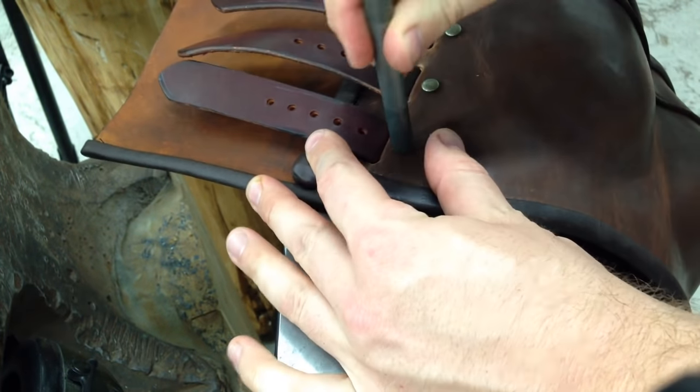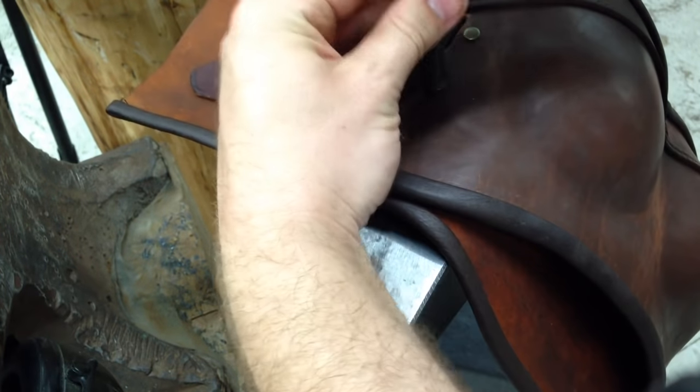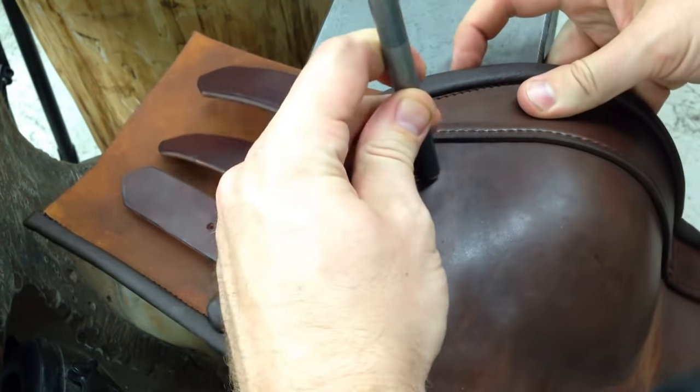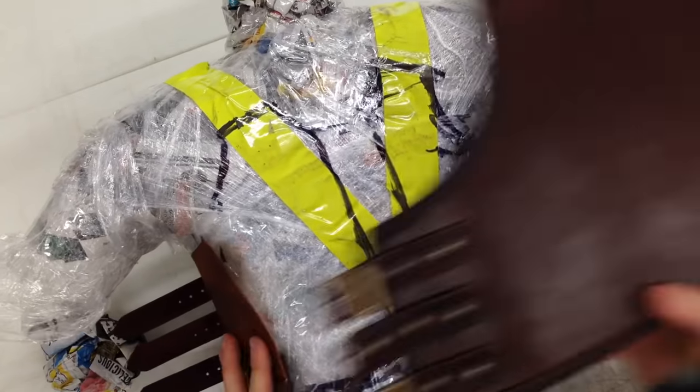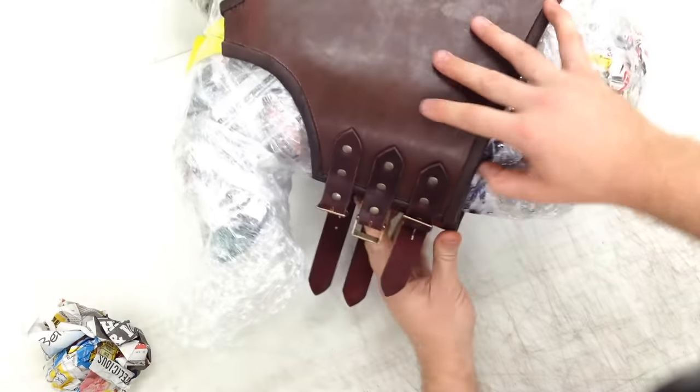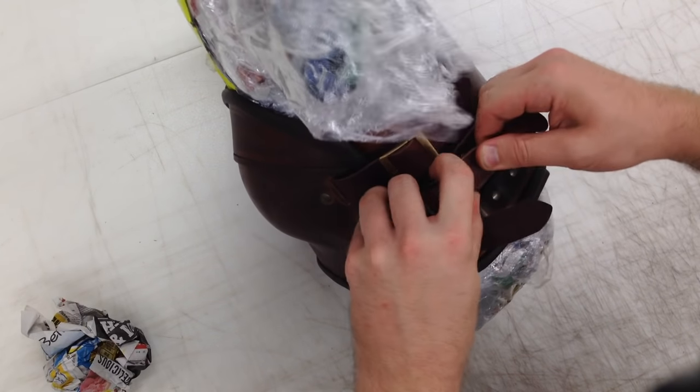It just makes two pieces function as if they were one and gives stability to both of them at the same time. So now that we've got that, we can attach the two pieces together. I'm just going to test fit this on the cellophane body form that I have.